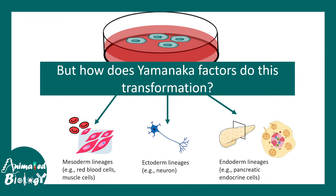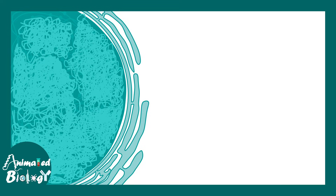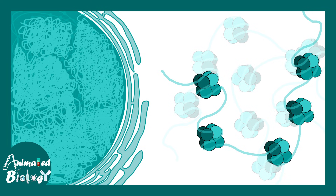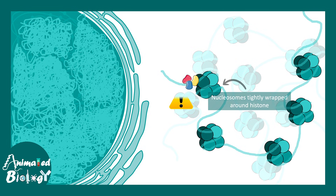The question is, how can Yamanaka factors perform these transformations at a fundamental level? These transformations are quite difficult to imagine. Inside the cell, DNA is compacted in the form of chromatin. There are many loci which are inaccessible to general transcription factors, which is why in differentiated cells other lineage markers are not present. The nucleosome is tightly wrapped around histones, preventing access.